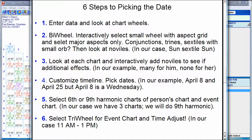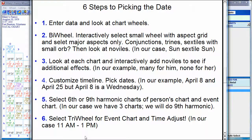Bottom line — we've found something fantastically wonderful in their charts. The sun sextile sun is exact, and it also picks up his ascendant with a trine. We found it. Now how do we pick the date? The way we pick the date — we're up to step 4 — is we use the timeline and customize it to just get transits to the planet we want. That's it. And then we look at the chart.